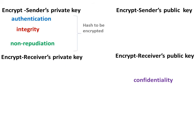Remember: for authentication, integrity, and non-repudiation, you need to create a hash and then encrypt the hash using the sender's private key. For confidentiality, the full message needs to be encrypted using the receiver's public key.